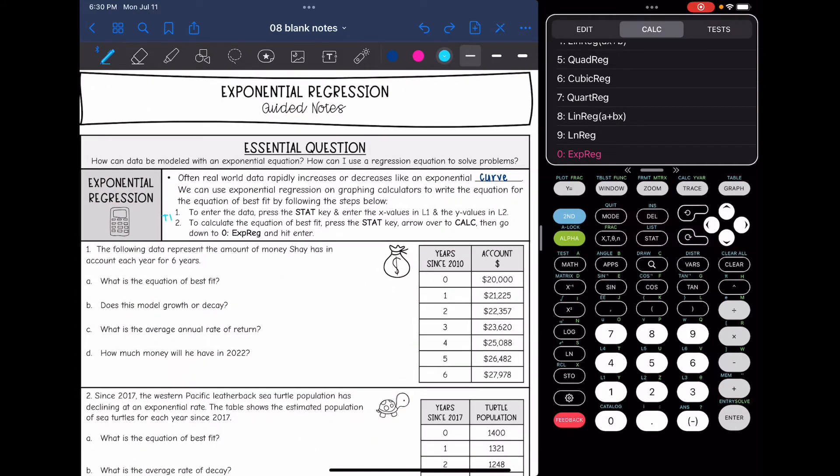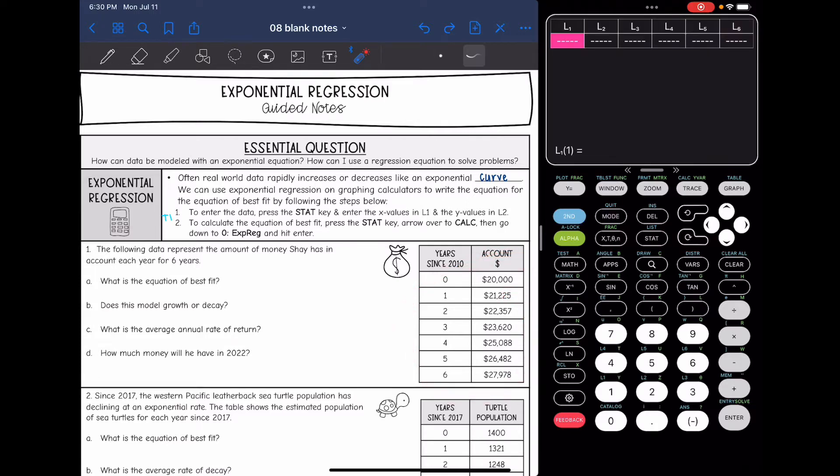So let's look at this first situation. It says the following data represents the amount of money Shea has in his account each year for six years. So I need to put this in the stat plot first. So I'm going to do stat, enter.